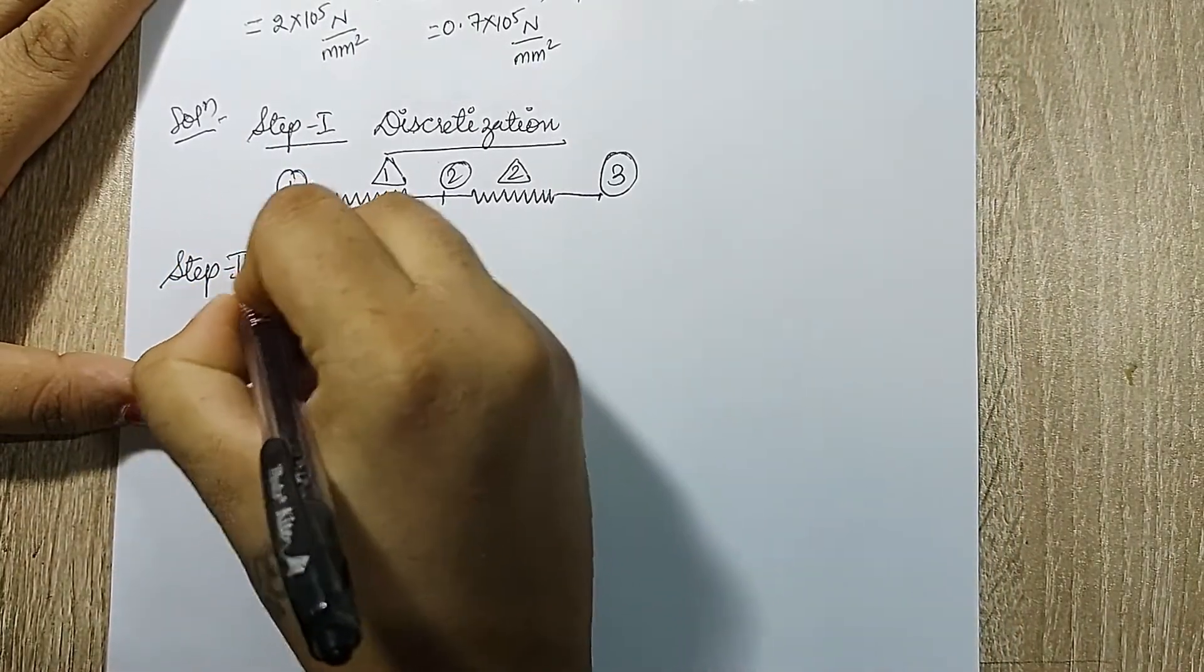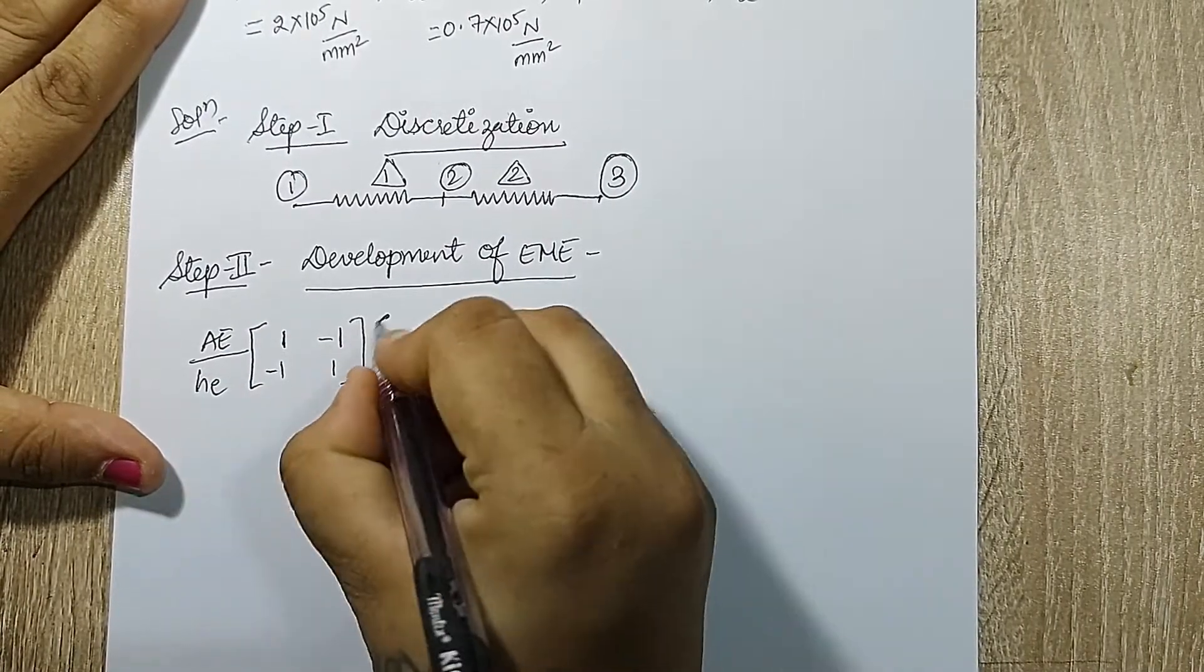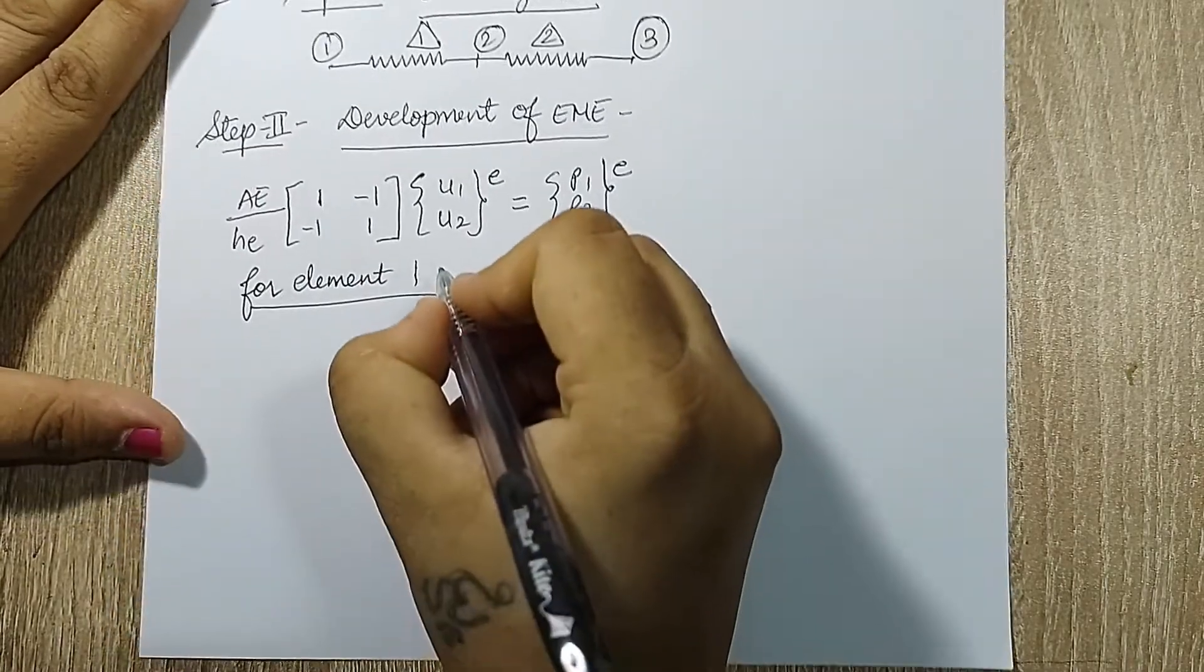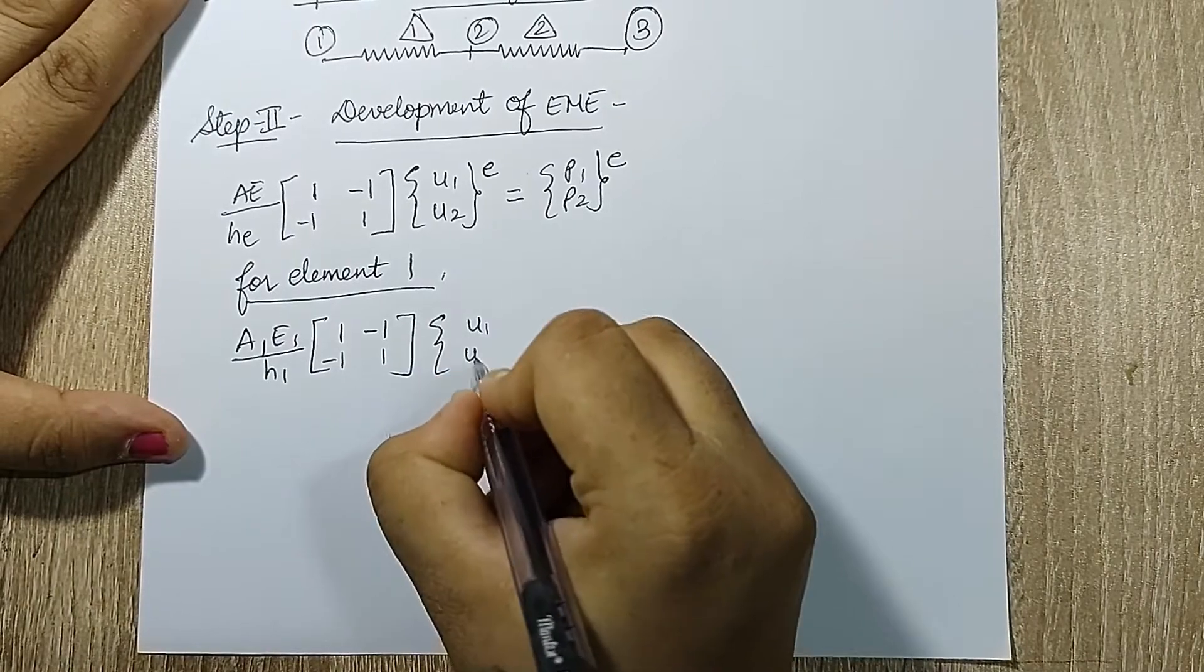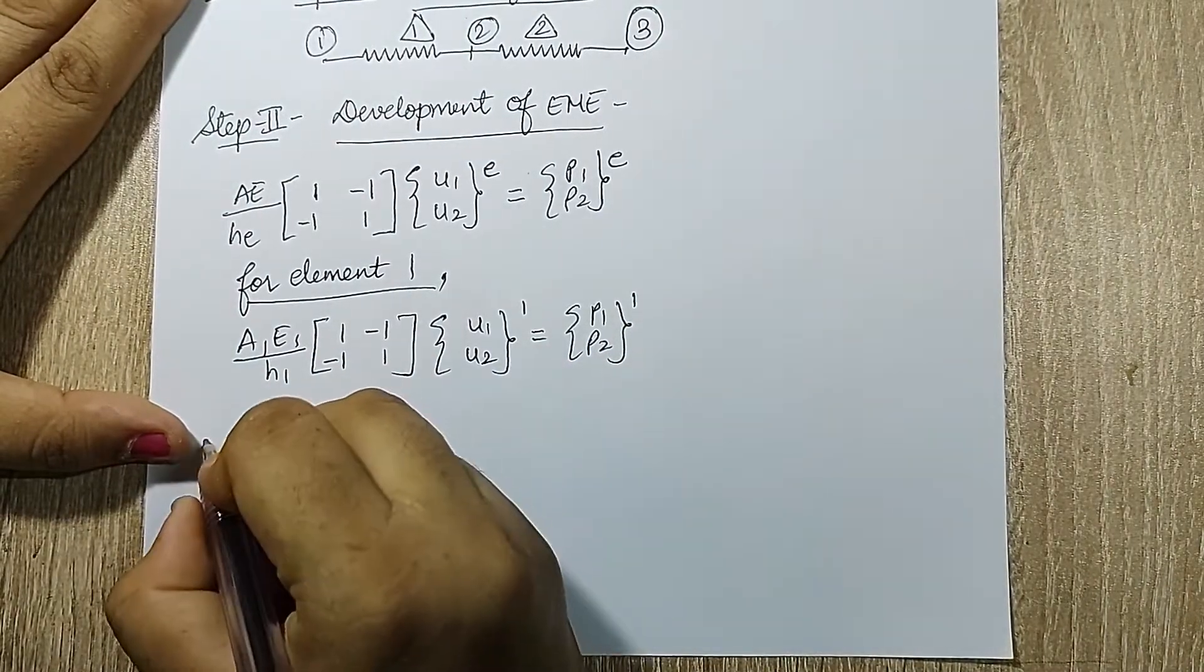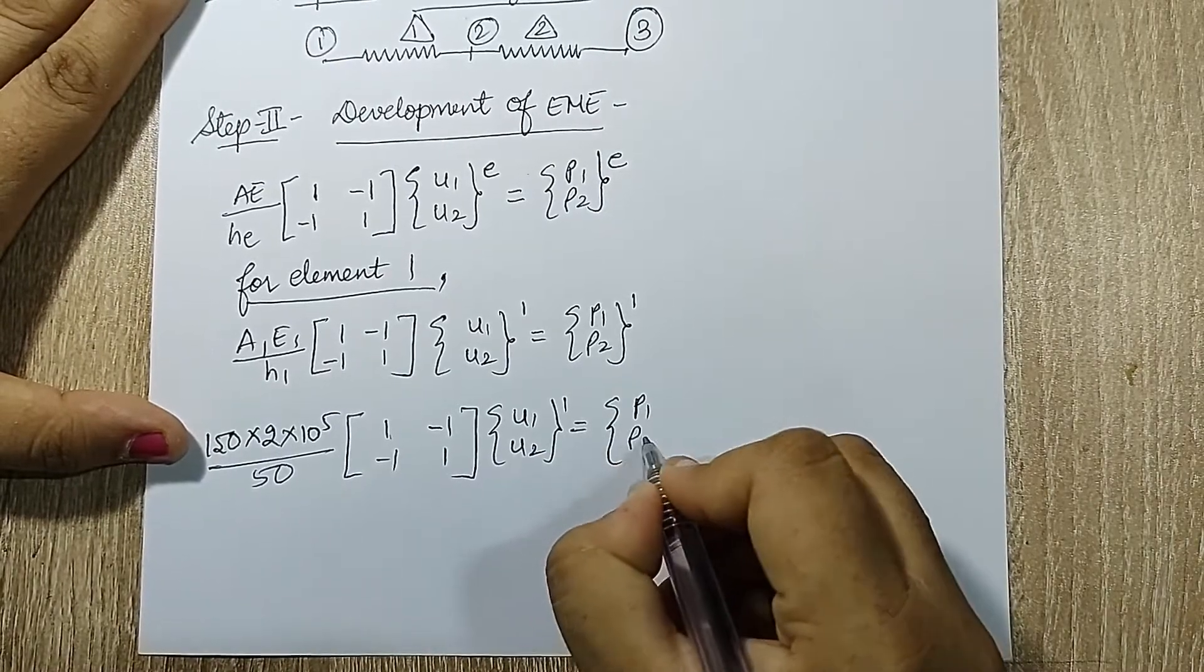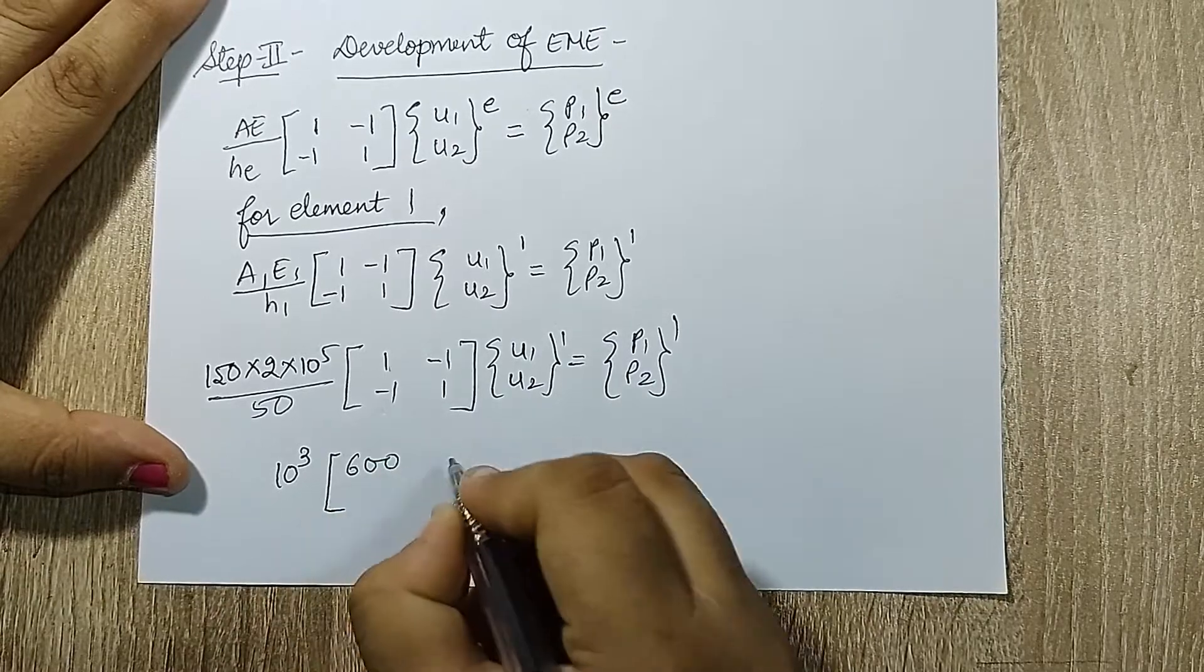Next I'll go to step 2, that is the development of EME. The equation is a e upon h e times the matrix [1, -1; -1, 1] times [u1, u2] raised to e equals [p1, p2] raised to e. For element 1, h1 is equal to 50, the value of a1 is 150, e1 is 2 x 10 raised to 5. When I solve this portion I get 10 raised to 3 and the number I get is 600. So I will just multiply 600 inside.